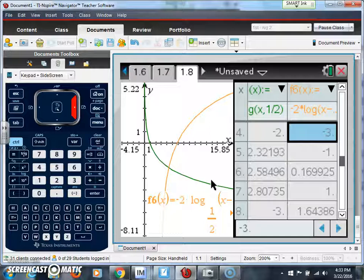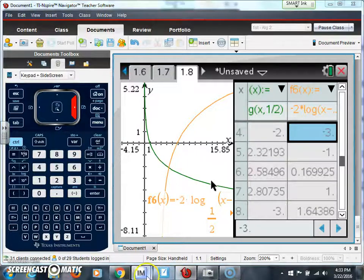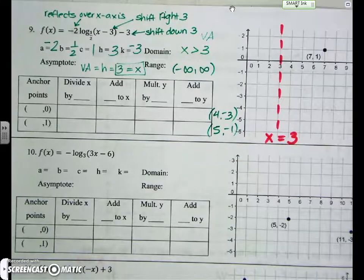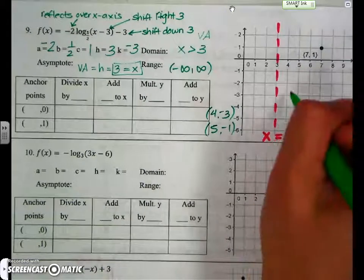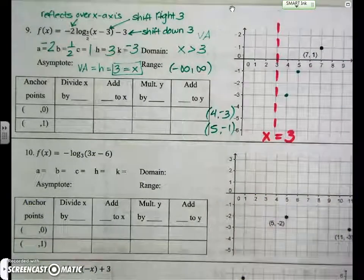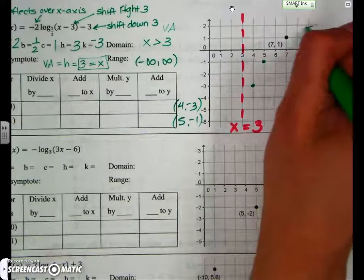So I'm going to put 4, negative 3, and 5, negative 1. So you plot those points, 4, negative 3, and 5, negative 1. Your graph is going to look something like this.